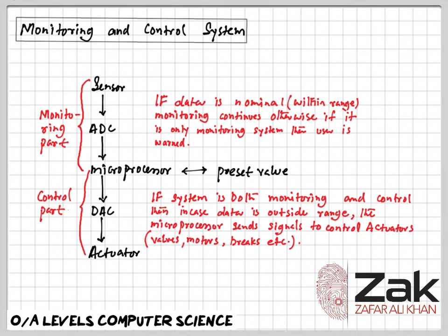Examples of monitoring include monitoring a patient in a hospital for vital signs such as heart rate and temperature, checking for intruders in a burglar alarm system, checking the temperature levels in a car engine, or monitoring pollution levels in the air.